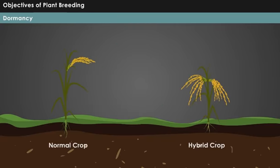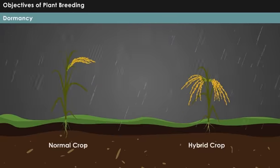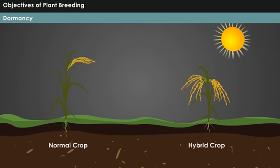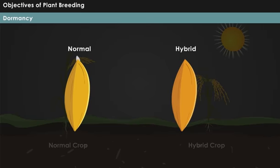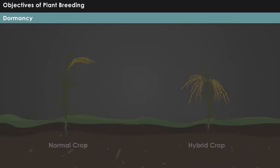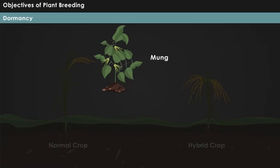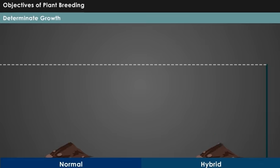Dormancy: In some crops, seeds begin to germinate before the harvesting period due to pre-harvest rains, leading to major loss. Removing the period of dormancy in crops like mung and barley can help in overcoming such losses.